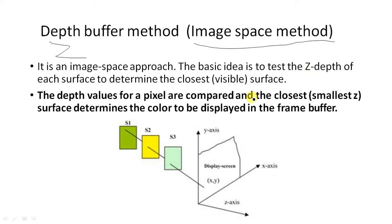In this approach, the surface depth is measured from the view plane along the Z axis of a viewing system — Z is considered as depth. When we convert a three-dimensional object into a two-dimensional output device, the XY coordinates remain the same and Z is considered as the depth. The basic idea is to test the Z depth of each surface to determine the closest visible surface.